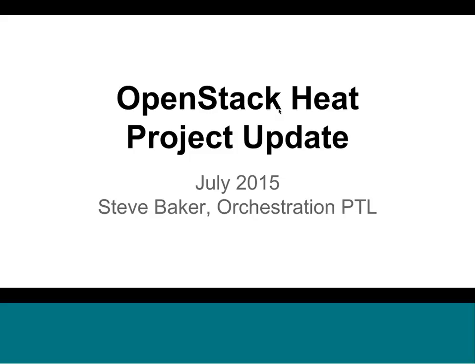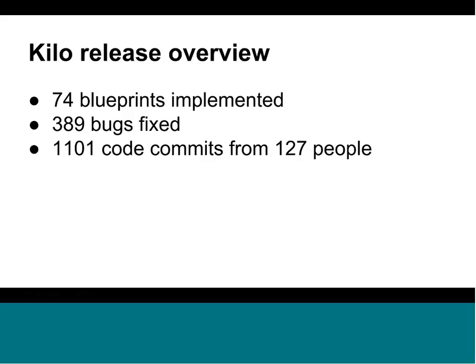Going on to the first slide, we'll give a quick overview of the general stats of the development pace in the Kilo cycle. There were 74 blueprints implemented, almost 400 bugs, 1,100 code commits from 127 people. This continues the trend of a well-engaged multi-vendor project, with quite encouraging participation in HEAT from a number of vendors.